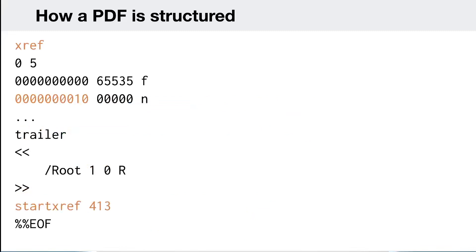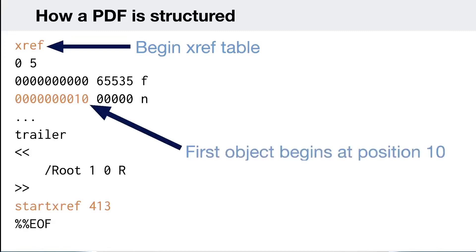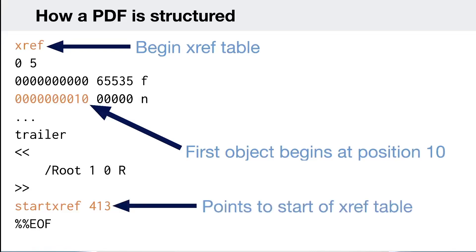The xref table always begins with the 'xref' keyword. The PDF specification requires a blank object at the start with a specific revision number marked as 'f' (free), meaning it's not used. After that, each object entry's number refers to the position in the document where that object occurs — so position 10 means the first object is located there. The 'startxref' keyword tells you where the xref table begins, in this case at position 413.